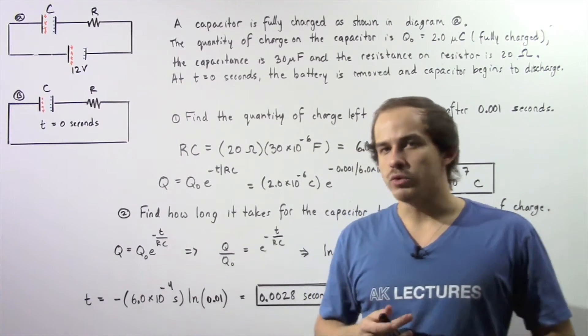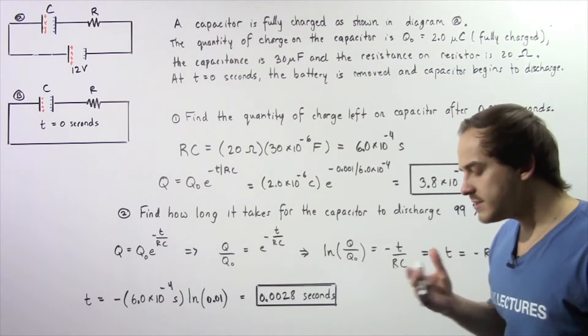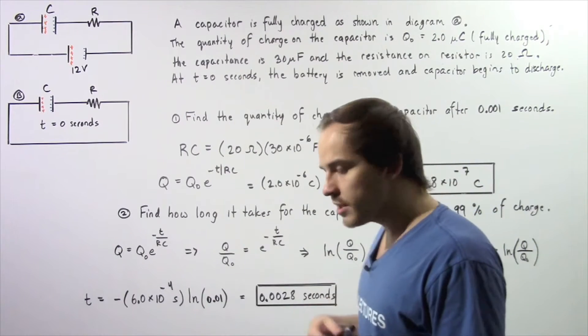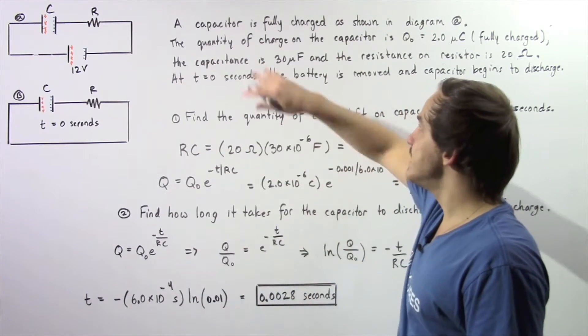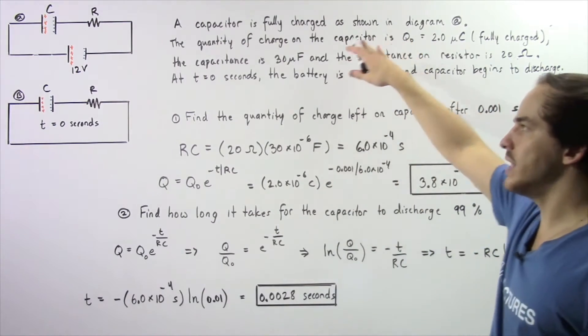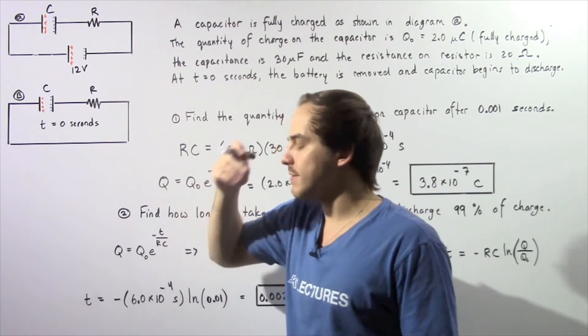Let's examine the following example that deals with RC circuits and discharging capacitors. Suppose a capacitor is fully charged as shown in the following diagram A.